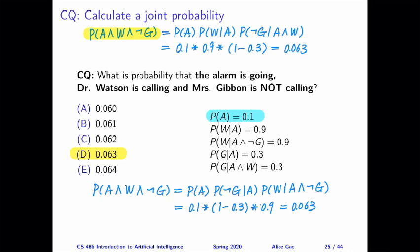Then in terms of conditional probability, we have all sorts of possibilities, right? So we have W given A, we have G given A, and then we have W given A and G, and we have G given A and W.